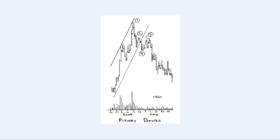Chart number one is Pitney Bowes, a chart from Mr. Evans' lecture from 1976. You can see all the important points marked as discussed above. At point one, it touches the uptrend overbought line. At point two, it fails to reach it, tries to regroup, and then fails miserably at point three. From there, it is all downhill.